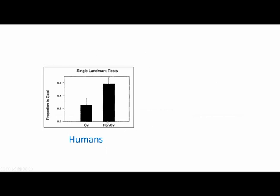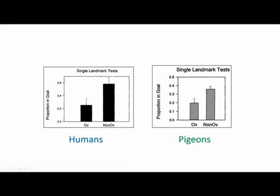Looking at the human data in comparison — the pigeon data was just described — the human data looks essentially identical. Humans were a little more accurate: up to about 0.6 proportion in goal versus about 0.35 for pigeons. But the difference between the two bars is pretty much the same across both species, which is really cool to see comparatively.